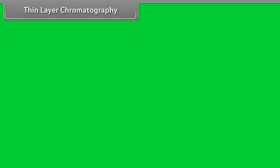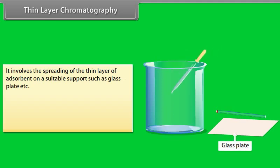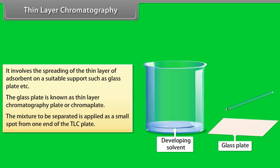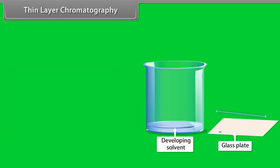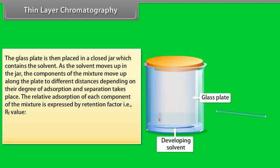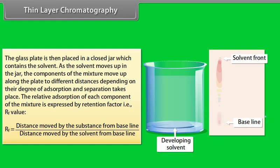Thin layer chromatography (TLC): it involves spreading a thin layer of adsorbent on a suitable support such as a glass plate, known as the TLC plate or chroma plate. The mixture to be separated is applied as a small spot at one end of the TLC plate. The plate is then placed in a closed jar containing a solvent. As the solvent moves up, the components move up along the plate to different distances depending on their degree of adsorption, and separation takes place. The relative adsorption of each component is expressed by the retention factor, Rf = distance moved by the substance from the baseline ÷ distance moved by the solvent from the baseline.